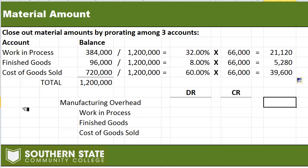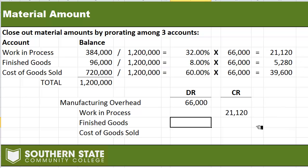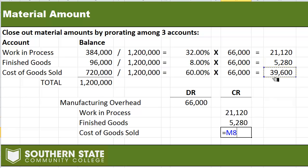We still need to get rid of that credit balance in manufacturing overhead, so we're going to debit it, and our credits are exactly what we just calculated: $21,124 to work in process, $5,280 to finished goods, and $39,600 to cost of goods sold.